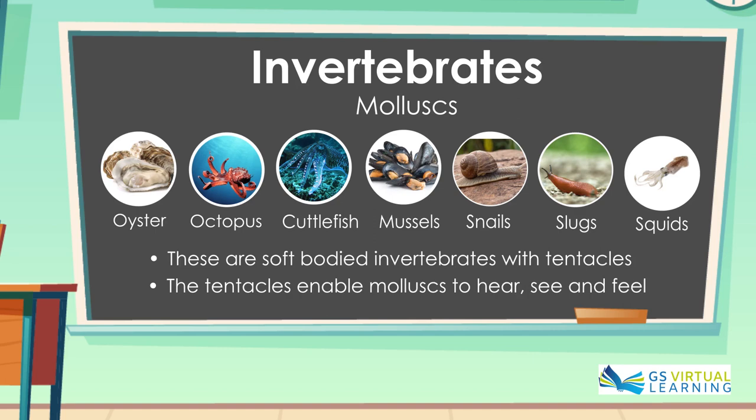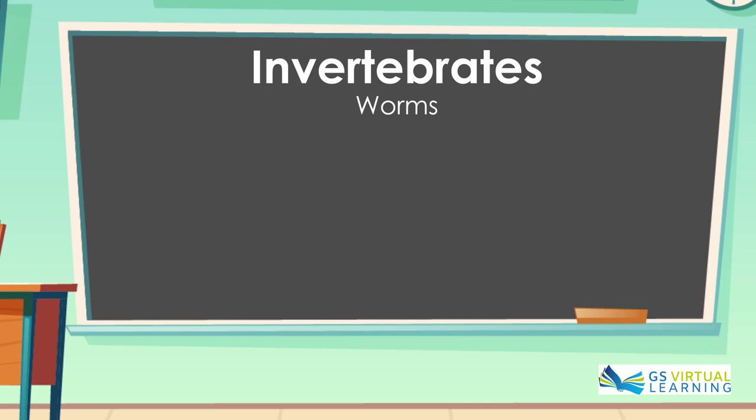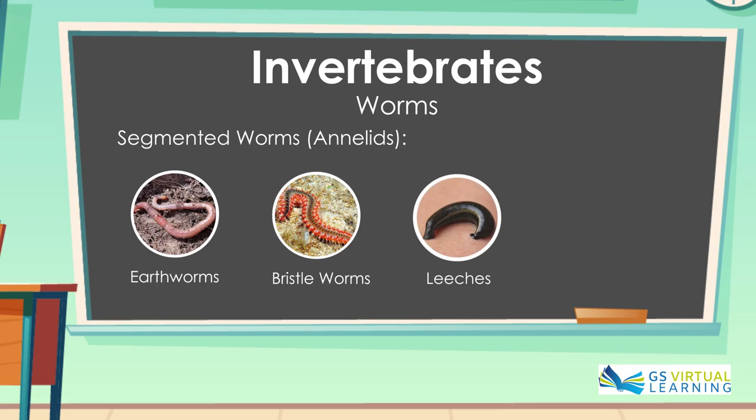The fifth group of invertebrates are Worms. Worms are classified in three groups. Segmented Worms or Annelids, such as Earth Worms, Bristol Worms, Leeches and Lug Worms.